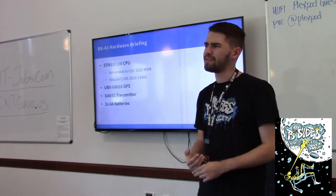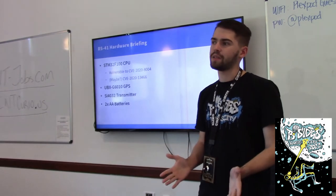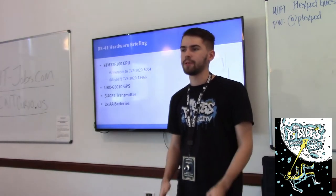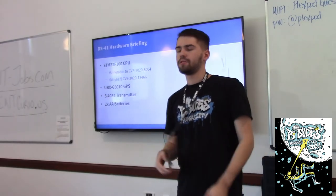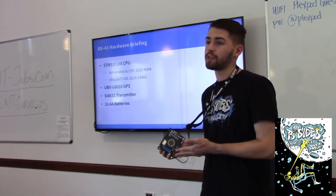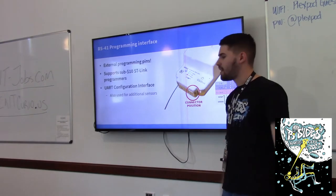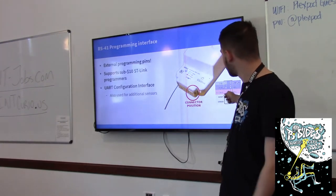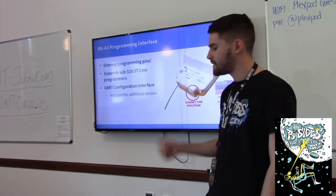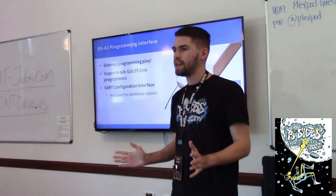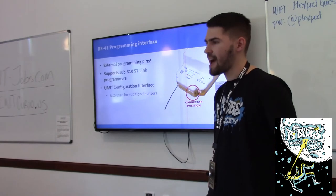It's got a Silicon Labs 4032 ISM transmitter going from 200 to around 800 MHz. Unfortunately we can't use this with the VHF band, which rules out ham radio APRS transmissions. If you get one of these, please don't try to power your badge using the AA batteries — they won't work. For the programming interface, behind this little styrofoam piece there's a programming interface with just a couple pins. Highly recommend picking up a $10 ST-Link and trying to program one of these — just take some jumper wires, hook in, and you'll have your own custom firmware in a couple minutes.